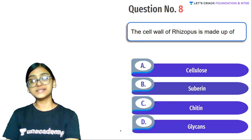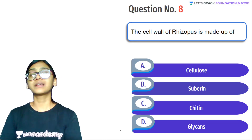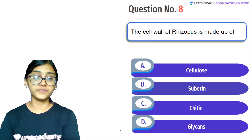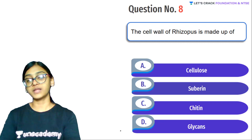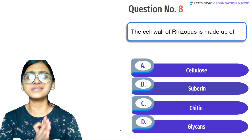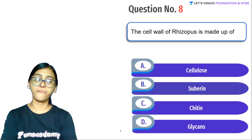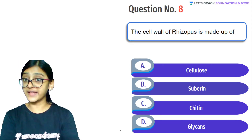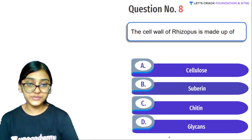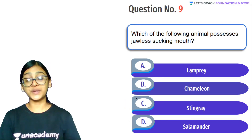Next question: The cell wall of Rhizopus is made up of what? First, what is Rhizopus? Rhizopus is a fungus. Fungi have chitin in their cell wall. So the answer is chitin — very simple.